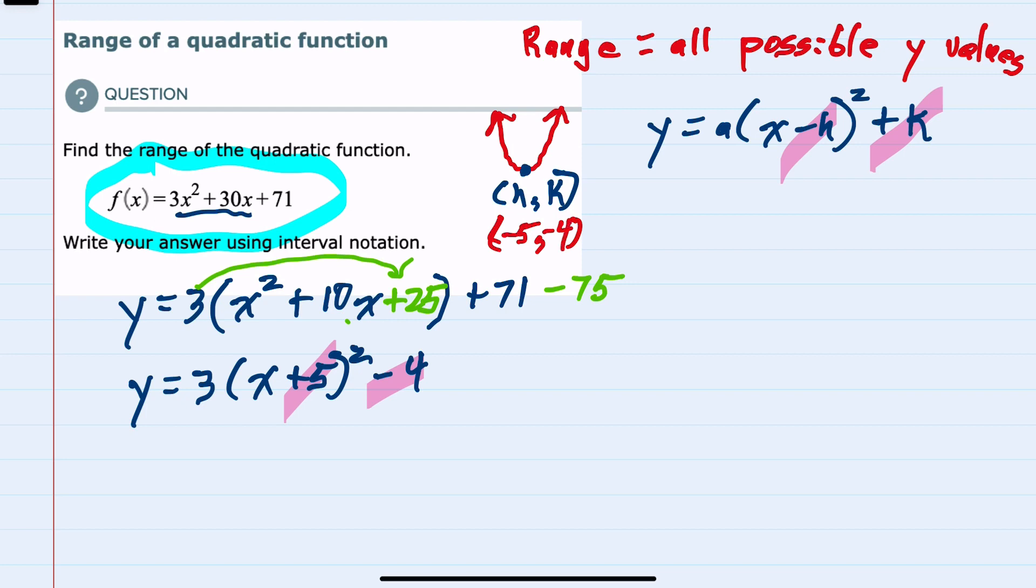We know that it opens up. So our range, all of the possible y values—the k value here, -4, is going to be the minimum y value, since it's going to move up from there, either to the left or to the right of the vertex.